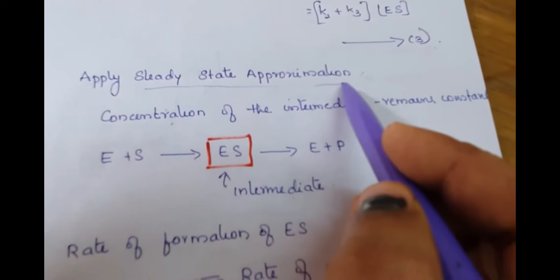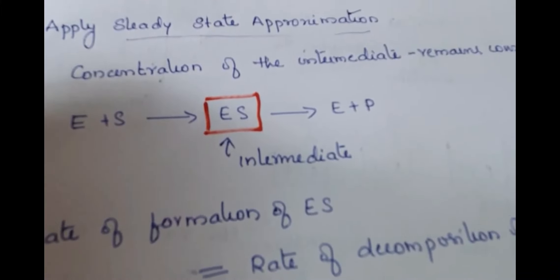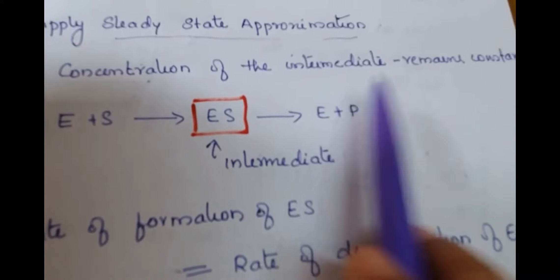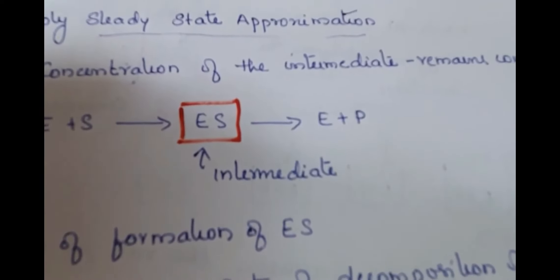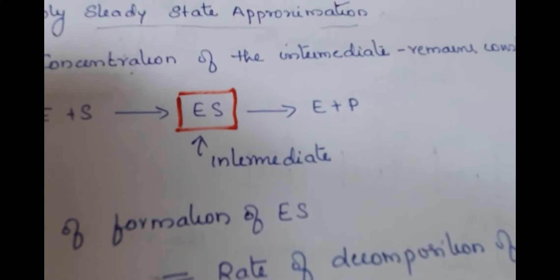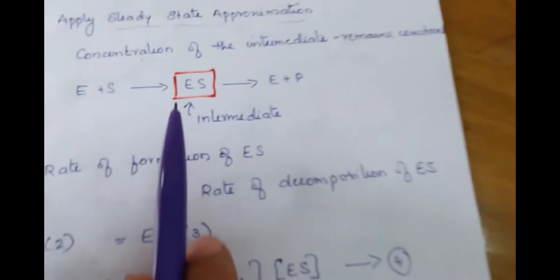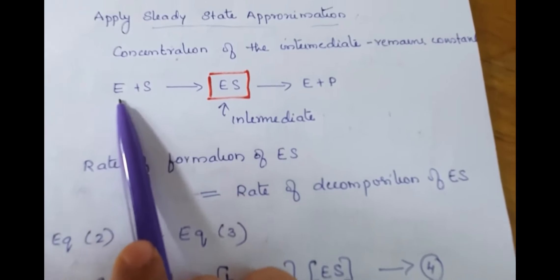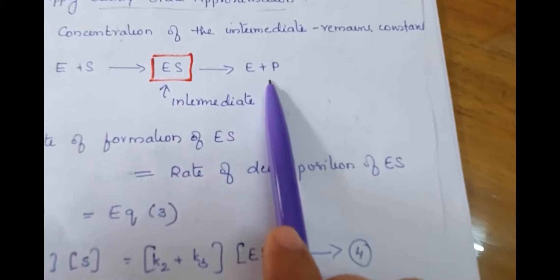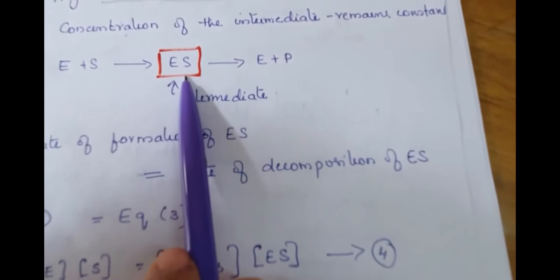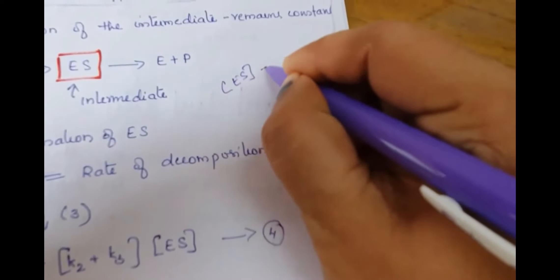Now we apply the steady state approximation. In a chemical reaction involving an intermediate, we consider the concentration of that intermediate to remain constant. Here the intermediate is the enzyme-substrate complex ES. According to steady state approximation, the concentration of ES should remain constant.